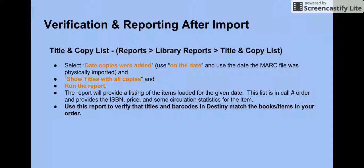Select Title and Copy List. To find the Title and Copy List, go to Reports, Library Reports, Title and Copy List. Then select Date Copies Were Added and use the date the MARC file was physically imported. Then select Show Titles with All Copies and then run your report. The report will provide a listing of the items loaded for the given date, in call number order, and provides the ISBN number, price, and some circulation statistics for the items. Use this report to verify that titles and barcodes in Destiny match the items or books in your order.